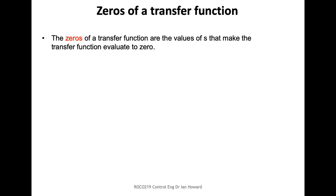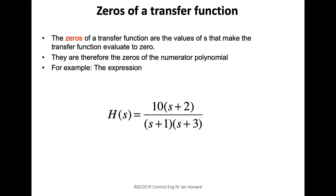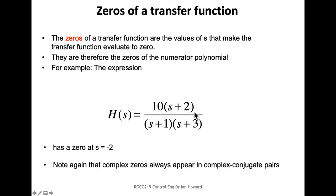As well as having poles, there are obviously also going to be values of S in the transfer function which make it go to zero — these are the zeros of the system. Looking at the expression, to find zeros we care about when the numerator term goes to zero. So when S is minus 2, then minus 2 plus 2 means the numerator goes to zero, so the whole thing goes to zero. Again, if a zero is a complex number, we'd also have complex conjugate pairs.